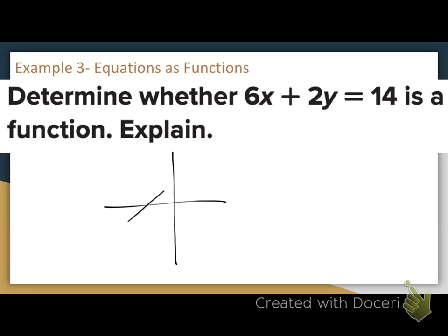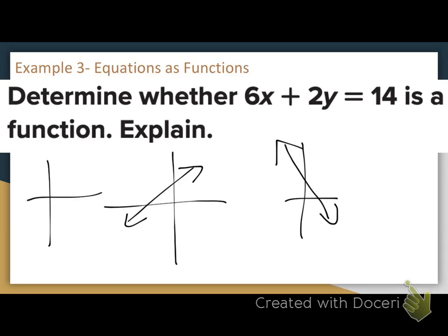If I have any line, do you think these lines are going to pass the vertical line test? Yes. The vertical line is only going to hit one point at a time on these lines. The only time a line would fail the vertical line test is if I had the graph of a vertical line — that's going to fail the vertical line test miserably.